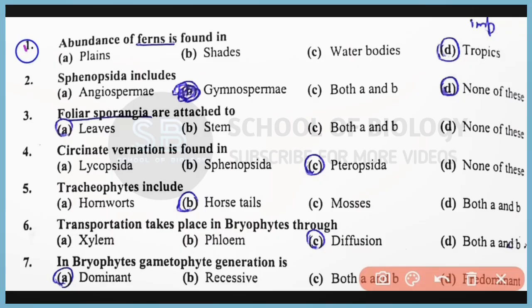Question Number 1: Abundance of funds is found in tropical regions. The correct answer is Option D. Question Number 2: Phenopsida belongs to which group of plants? The correct answer is Option D — none of these — because Phenopsida belongs to Pteridophytes.